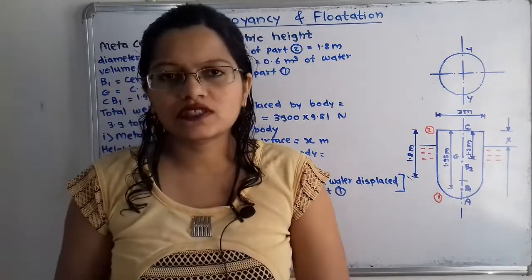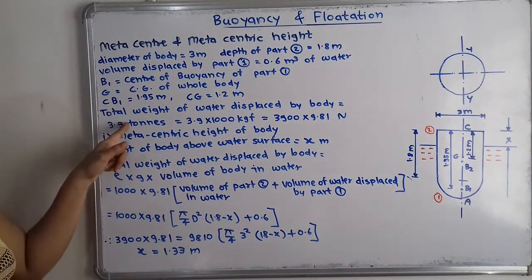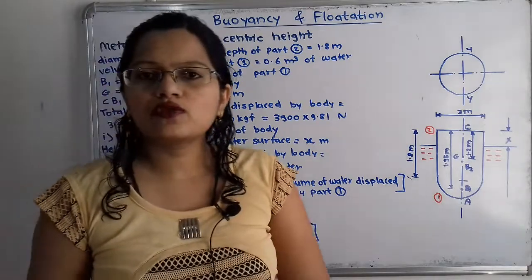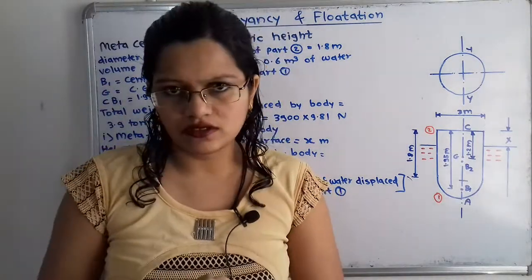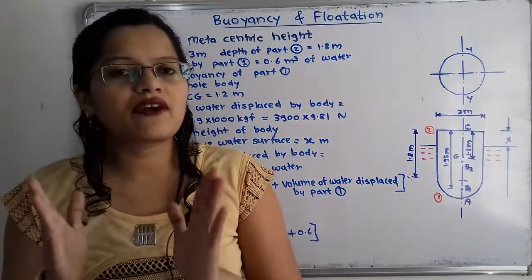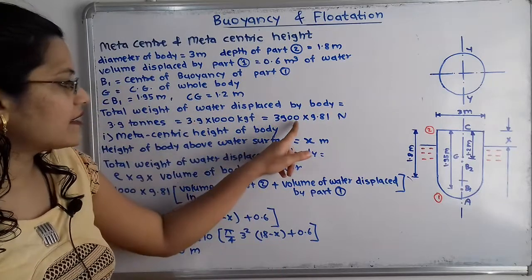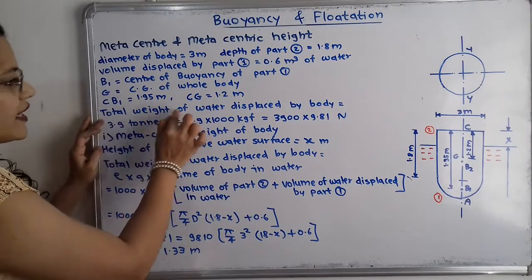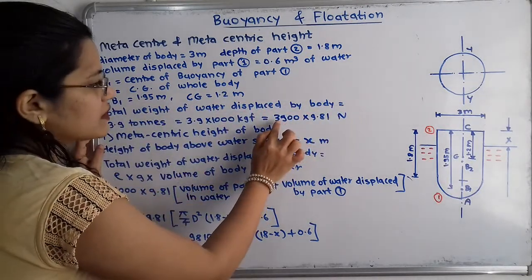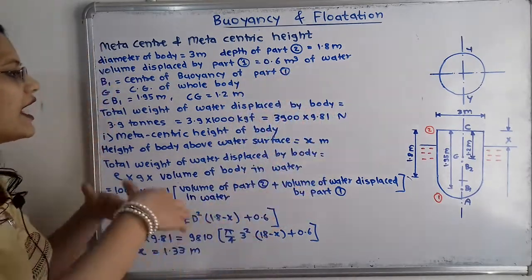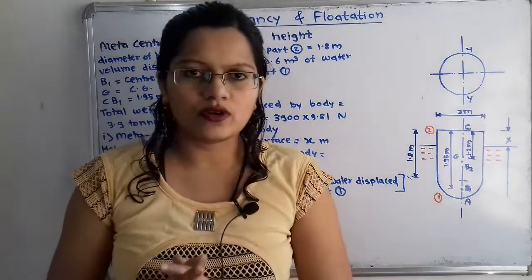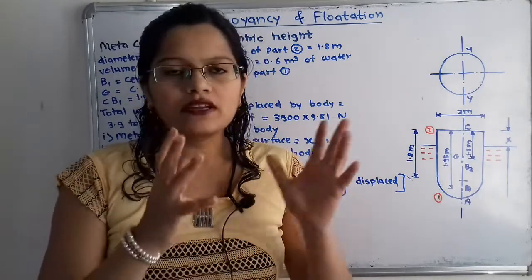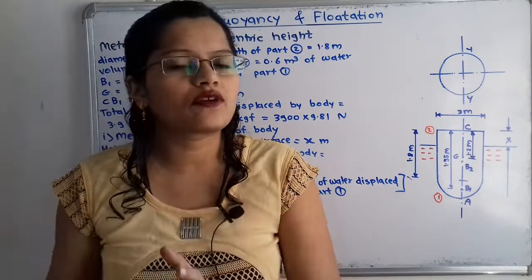Converting units: 1 ton equals 1000 kilogram, so 3.9 tons equals 3900 kgf. Converting to Newtons (our standard unit) by multiplying with 9.81: total weight = 3900 × 9.81 Newton. This equals the weight of the body, because when a body displaces water, the weight of displaced water equals the weight of the body.